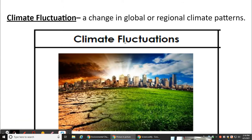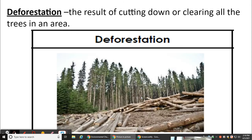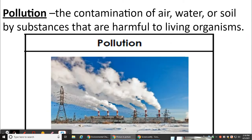Climate fluctuations are a change in global or regional climate patterns. Deforestation is the result of cutting down or clearing all the trees in an area. Pollution is the contamination of air, water, or soil by substances that are harmful to living organisms.